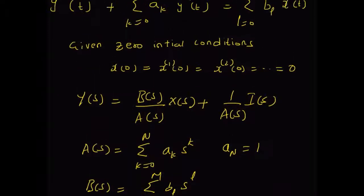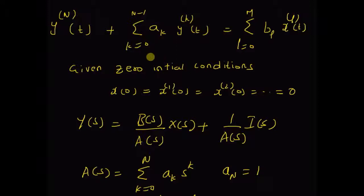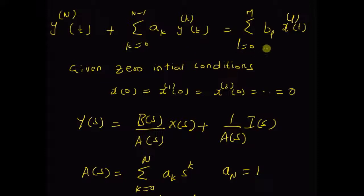Now note that the ordinary differential equation given here has three terms. The first one is the nth derivative of y(t), the second one is a weighted sum of the kth derivatives from k equal to 0 to n minus 1, and similarly a weighted sum of L derivatives of the input x(t). So we have to find the Laplace transforms of these terms separately.